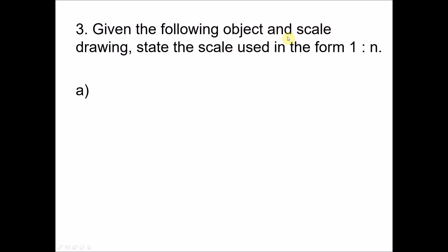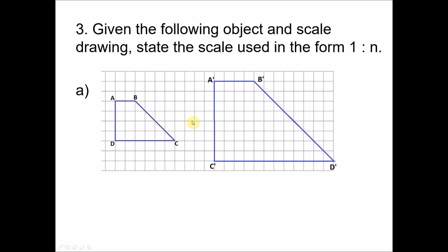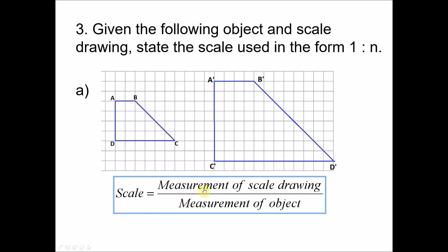Number three: given the following object and scale drawing, state the scale used in the form 1 is to n. From the labels A and A-prime, A-prime is used for the image or scale drawing. So this is the object and this is the scale drawing. To state the scale, we always refer back to the formula: scale equals measurement of the scale drawing over measurement of the object. Taking one side of the scale drawing: four units. The corresponding side of the object is two units.